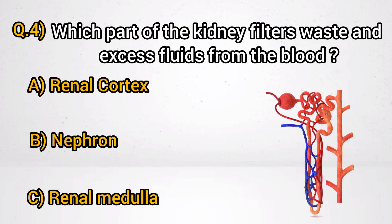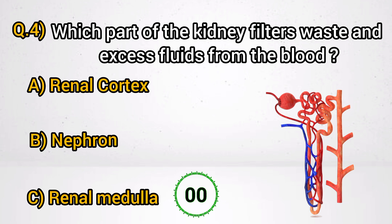Question 4: Which part of the kidney filters waste and excess fluids from the blood? Answer B: Nephron.